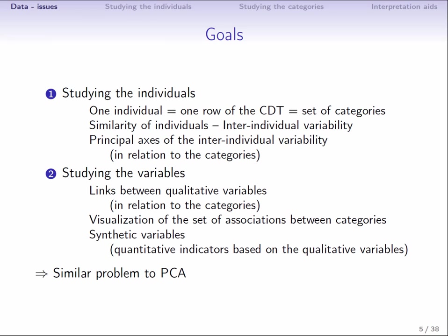This whole framework greatly resembles principal component analysis. Both work with the table of individuals in the rows versus variables in the columns. So, from a technical point of view, things are quite different, because in principal component analysis, we have quantitative variables, whereas in multiple correspondence analysis, we have qualitative ones.